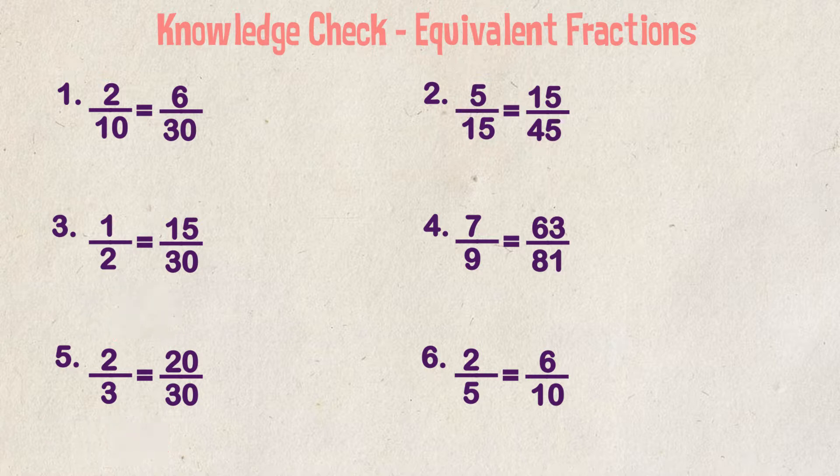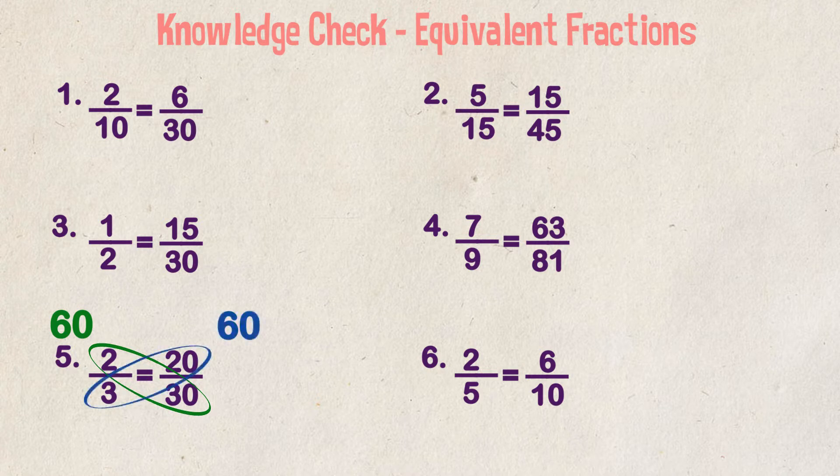As a double check, we can cross multiply, which says 2 times 30 is 60 and 3 times 20 is 60. Both equal 60, so the fractions are equivalent.